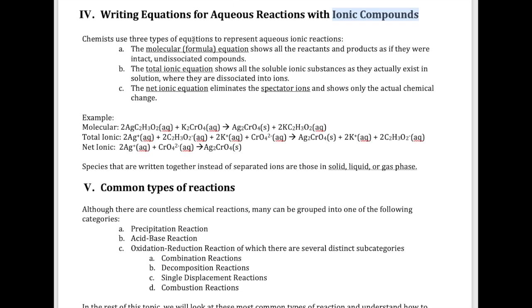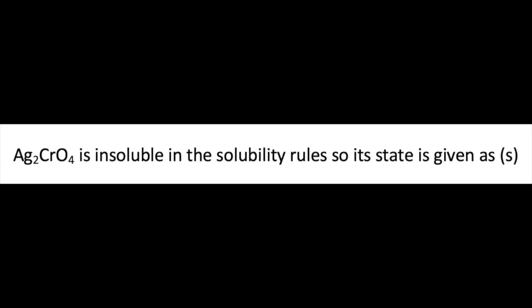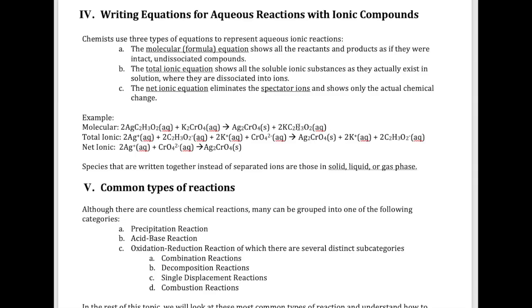When you have an ionic compound, you have to be careful in writing your equations for any aqueous reaction. There are three different ways we can write equations for ionic compounds dissolved in water undergoing reactions. The molecular or formula equation is just writing the complete formula like shown here. I have silver acetate reacting with potassium chromate to form silver chromate, which is a solid, and then potassium acetate. I'm writing the entire formula just like in all the equations you've seen so far.